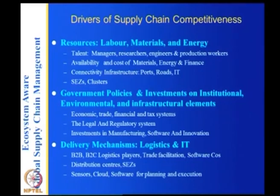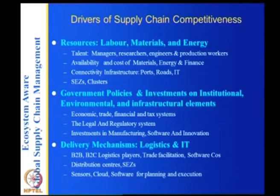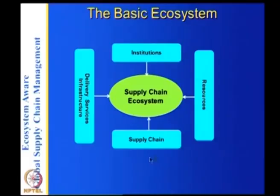We have divided government policies into economic, trade, financial, and tax systems, legal and regulatory frameworks, and so on, and delivery mechanisms accordingly. By looking at this, what you are trying to do is understand the supply chain ecosystem. Depending on the supply chain, these things differ — for an auto cluster, the delivery mechanisms needed are different from those for oil and gas or electronics verticals. Consultants call this business competitiveness under various names.